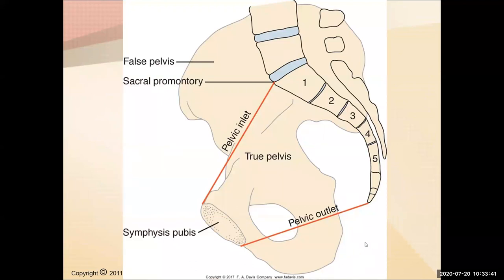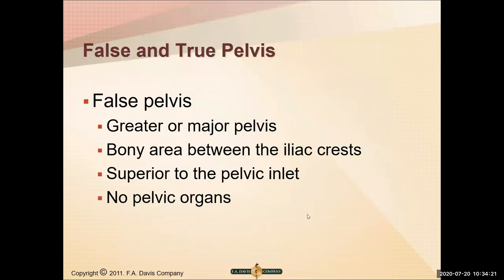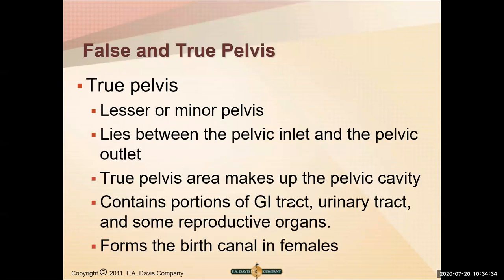Sometimes you'll hear people talk about the false pelvis versus the true pelvis. The false pelvis, or greater pelvis, is the bony area between the iliac crests, superior to the pelvic inlet, and it contains no pelvic organs. The true pelvis, or lesser pelvis, contains the pelvic organs: part of the GI tract, the urinary tract, some reproductive organs, and it forms the birth canal in females.